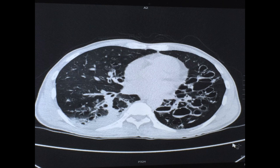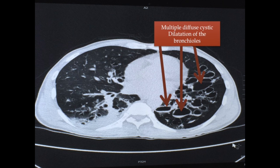Multiple subpleural pulmonary bullae are seen, mainly at the apical and posterior segments. Here I have labeled the radiological findings. Thank you for watching this video.